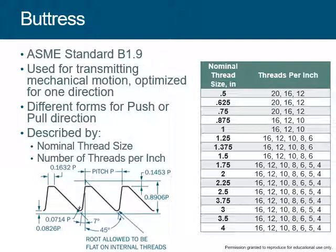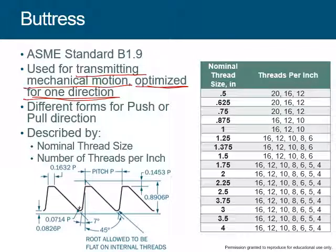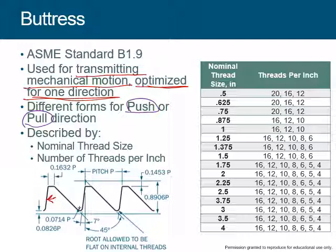For the buttress thread — again used for transmitting mechanical motion — it's optimized in one direction. If you really need all your force in one direction and don't care about the other, you use a buttress thread, where the force is really strong in one direction but not as much in the opposite. You can design it for different forms of push or pull — basically a mirror image. The angle here is 45 degrees versus ACME's 30 degrees, and everything is a function of the pitch as usual.